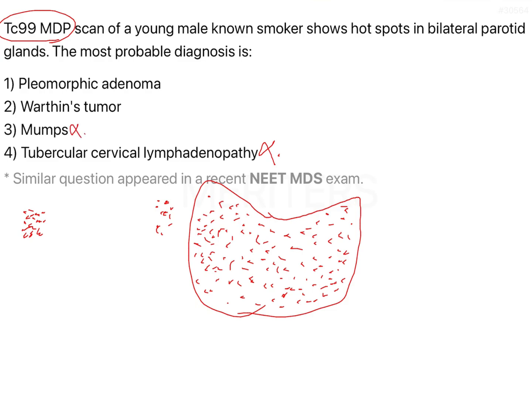Mumps can also be ruled out. Mumps is a viral infection that disturbs the function of the gland — it causes enlargement but impairs saliva production. Because gland function is disturbed, there will be no contrast uptake on the technetium scan. Technetium scans mainly identify neoplasms, so we are left between two options.